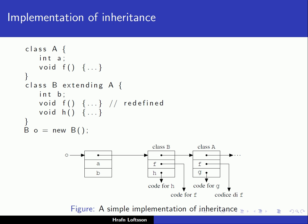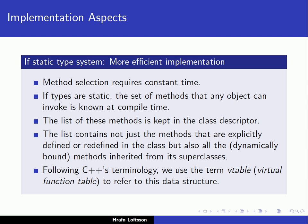We said earlier that one possible implementation has a pointer from the object to the class descriptor, and then from the subclass to the superclass and so on, requiring a linear scan. There are more efficient implementations. If we have a static type system, the method selection requires constant time. If types are known at compile time, the set of methods any object can invoke is known at compile time, and we can keep a list of these methods in the class descriptor.